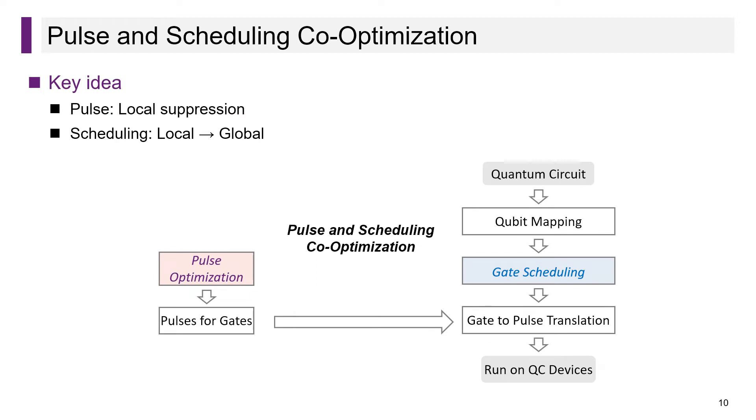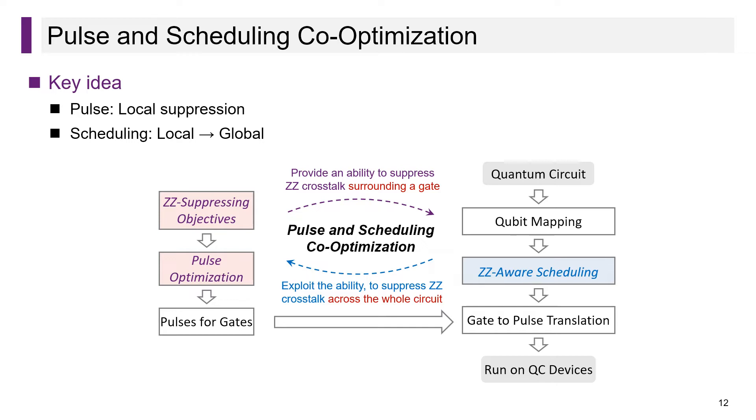We address this problem by leveraging circuit-to-gate compilations and co-optimizing pulses and scheduling policies. Specifically, we optimize the pulses in implementing quantum gates and provide local suppression of the ZZ crosstalk surrounding the gate. We then design scheduling strategies for exploiting the ability of local suppression to achieve global suppression across the whole circuit. In our approach, we only need to optimize pulses on small systems and we design a scheduling algorithm that takes polynomial time. In this sense, we tackle ZZ crosstalk in a scalable way.